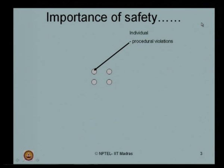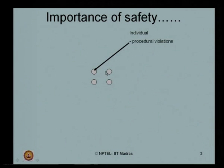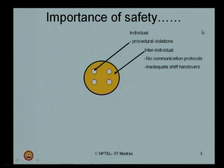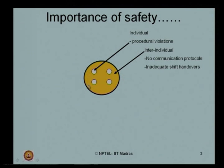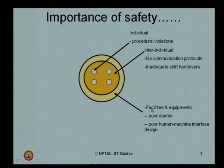This can be explained diagrammatically. In a process industry, we have a core of individual groups. These individuals may commit procedural violations, and this is carried forward by an inter-individual phenomenon. There is no communication protocol between groups because of inadequate shift handovers, which results in further complications in facilities and equipment. For example, the facilities may have a poor alarm system.